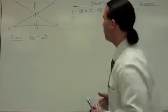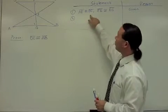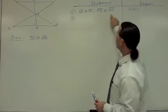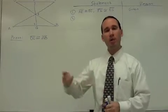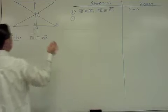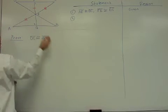So let's take a look at what's going on in this proof. We have this picture. We're given that AE is congruent to EC and FE congruent to EG. So as always, you want to start off by marking up your picture. Put down what you have. AE congruent to EC, FE congruent to EG.